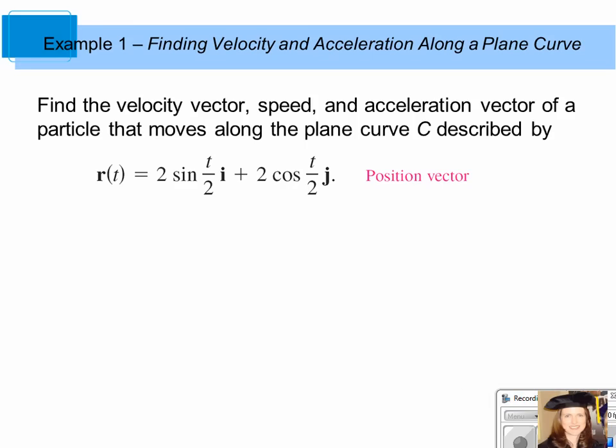Continuing on with section 12.3, in this example we want to find the velocity vector, the speed, and acceleration vector of a particle that moves along the plane curve C, described by r of t equals 2 sine t over 2i plus 2 cosine t over 2j.